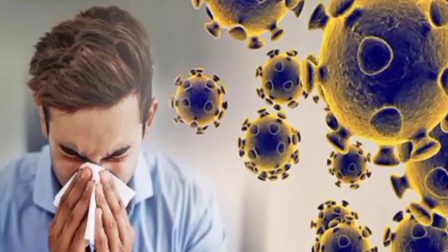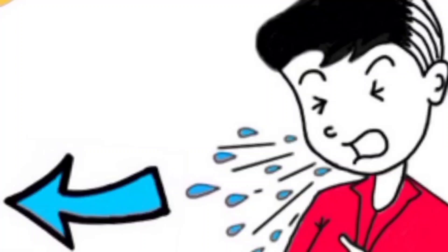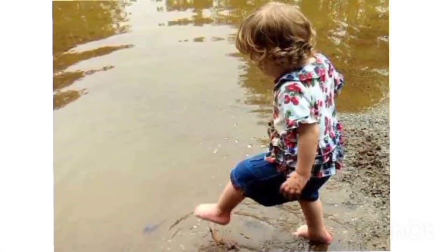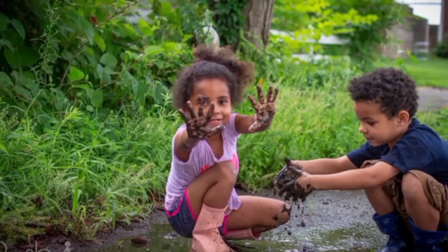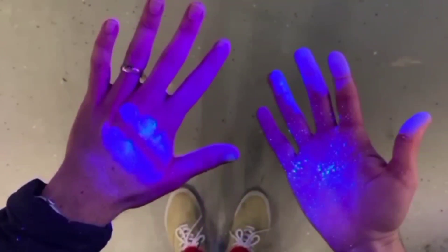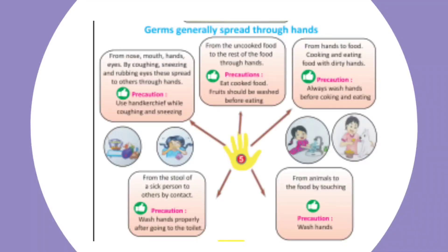Fever, cold, and cough are caused by germs, but from germs we also get many other diseases like dysentery, cholera, and measles. Germs reach our nails and hands in various ways from the filth around us. Let's understand that germs are often spread through hands.